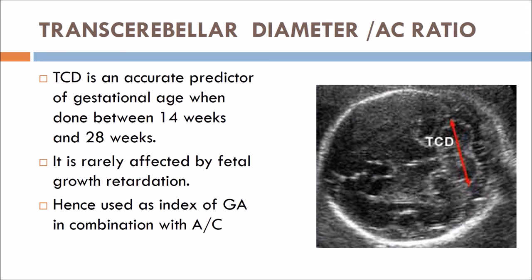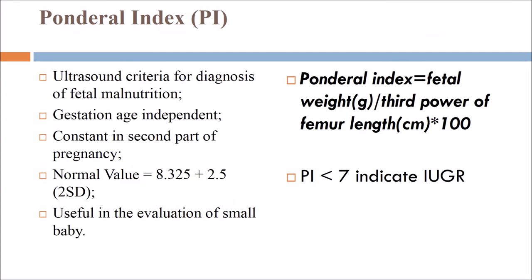The transcerebellar diameter (TCD) to abdominal circumference ratio is also used. TCD is an accurate predictor of gestational age when measured between 14 and 28 weeks and is rarely affected by fetal growth retardation, so it is used as an index in combination with abdominal circumference. The ponderal index is an ultrasound criterion for diagnosis of fetal malnutrition. It is constant in the second part of pregnancy and the normal value is 8.325 ± 2.5 (two standard deviations). The ponderal index equals fetal weight in grams divided by the third power of femur length in centimeters, multiplied by 100. If the ponderal index is less than 7, it indicates IUGR.